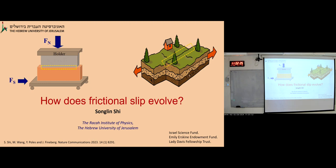Thanks for the introduction. It's my pleasure to have such a chance to share my work here. Today my topic is about how frictionless slip works. Frictionless slip is characterized by the propagation from the nucleation slide, and we will show that it is similar to the earthquake. During slip, there are a lot of secondary ruptures, and all these secondary ruptures are described by the linear elastic fracture mechanics.